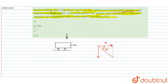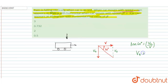Let us consider the velocity of rain is V0. Then tan 60° = V0 / V. So the value of V0 = V × tan 60° = √3, meaning V0 = √3 · V.